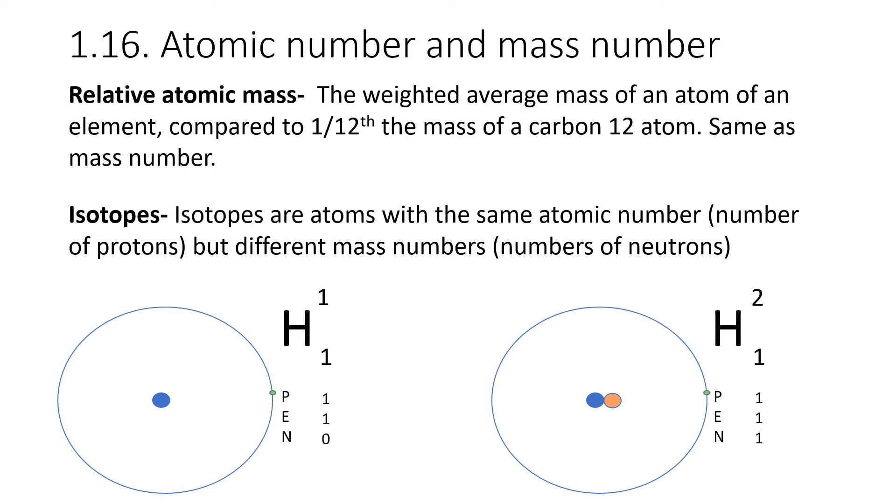This second definition is another one you should memorize, regarding isotopes. Isotopes are atoms with the same atomic number, the same number of protons, but different mass numbers, or different numbers of neutrons. I've got an example for you here. On the left, we have a hydrogen atom. It's got one proton, one electron, and no neutrons. Its mass number, therefore, is one. Its atomic number is one. Next to it, we have an isotope of hydrogen called deuterium. This one has a mass number of two. It's got an atomic number of one, which means it's still hydrogen. It's got one proton, one electron, but it's got a mass of two. Therefore, it has one neutron. These two atoms are isotopes of each other. They have the same atomic number but different mass numbers.